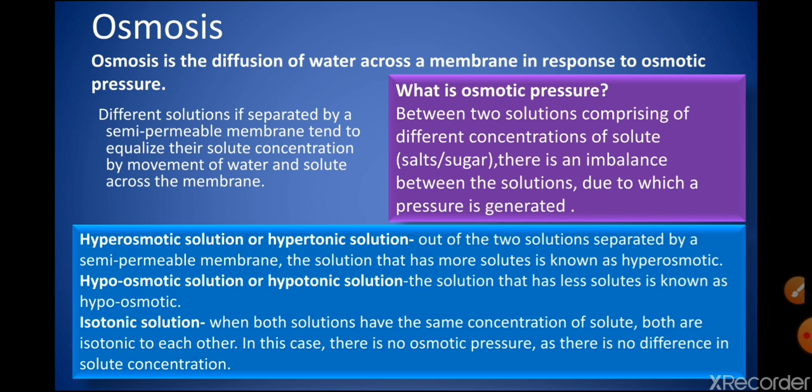Movement takes place between the solutions — either of water or of the solute present in the solutions. On the basis of the concentration of solutes, solutions are of three types. First is hyperosmotic or hypertonic solution — the solution with more concentration of solutes. Second is hypoosmotic or hypotonic solution — the solution with less concentration of solutes. Third is isotonic solution — when both solutions have the same concentration of solute, there is no osmotic pressure.